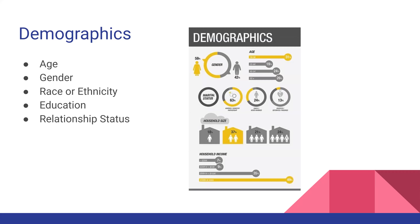When we talk about demographics, we're talking about some things you usually think about when you think about a person — their age, gender, race or ethnicity, education, relationship status — basically any kind of general background stuff. These are also things you'll see if you take a survey. It'll ask things like, are you married? How many people live with you? And this will be the basis for the majority of audience personalities.